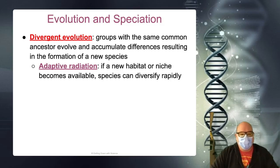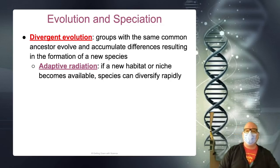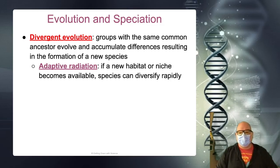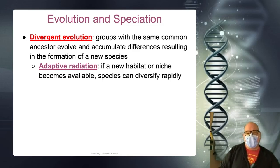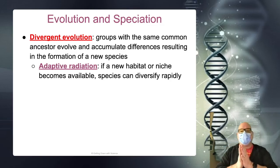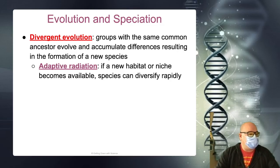In divergent evolution, groups with the same common ancestor evolve and accumulate differences. This might be like turtles — there are many different species of turtle, but they probably all had a few common ancestors. Adaptive radiation is part of this. If some new habitat or niche becomes available, like with the extinction-level event for the dinosaurs, this can happen very quickly and species can branch out to many different species very quickly if new niches open up.